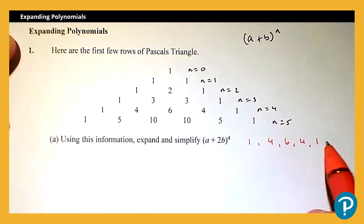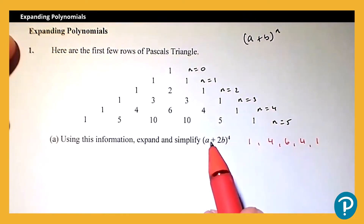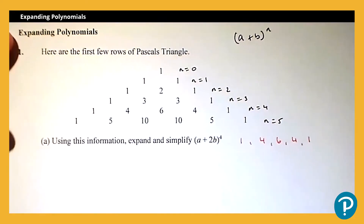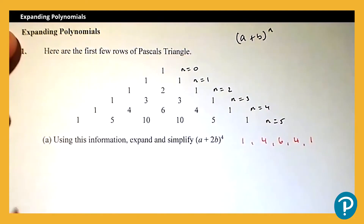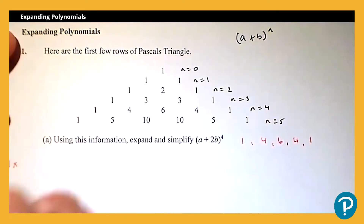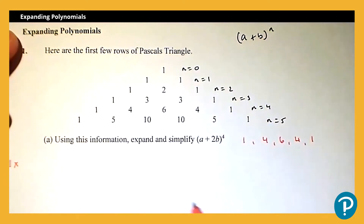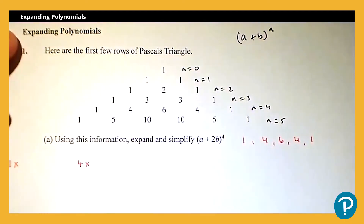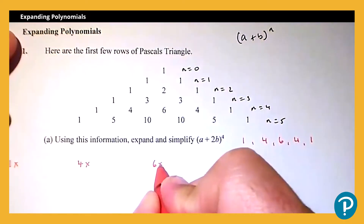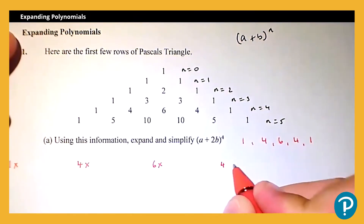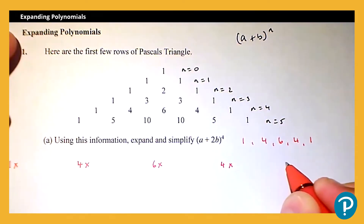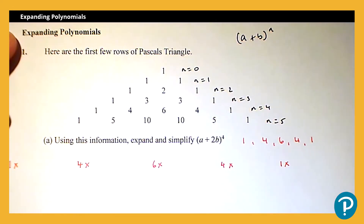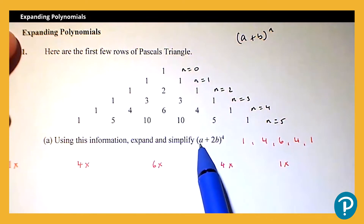I'll start by writing those coefficients in. My first term is going to be 1 multiplied by something, then 4 multiplied by something, then 6 multiplied by something, then 4 multiplied by something, and finally 1 multiplied by something.